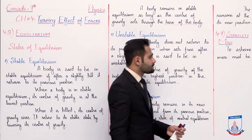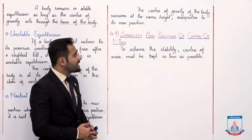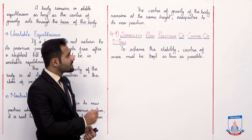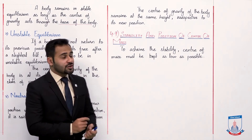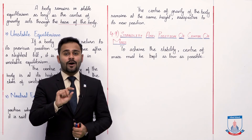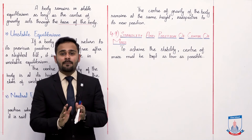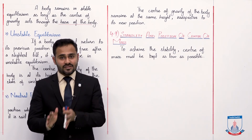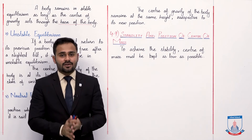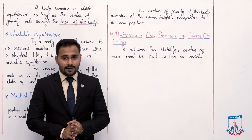In neutral equilibrium, the center of gravity of the body remains at the same height irrespective of its new position. Isme kya hai ki center of gravity jo point hai woh same height par rahega, chahe aapki position previous wali ho ya koi new position aa jaaye — center of gravity point change nahi hoga.